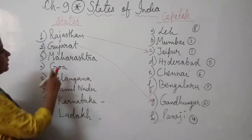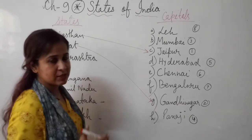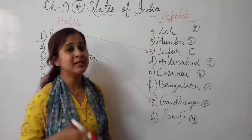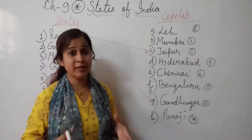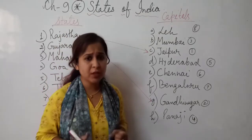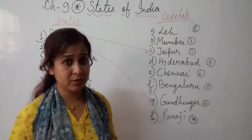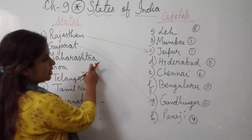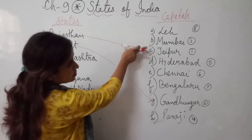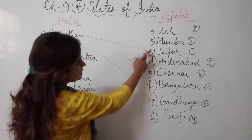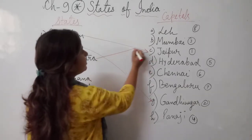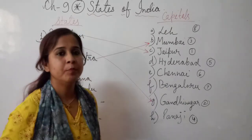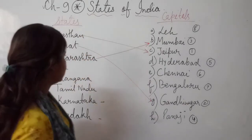Next is Maharashtra, which is known as the financial capital of India. It is one of the metropolitan cities with a very large population. The capital of Maharashtra is Mumbai. So Maharashtra is matched with Mumbai. Next is Goa, one of the smallest states. The capital of Goa is Panji.